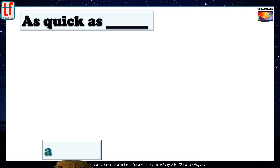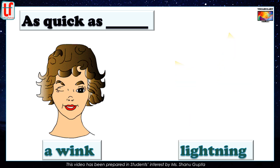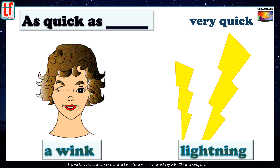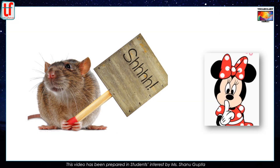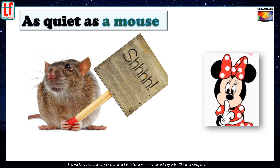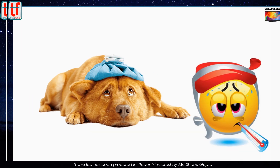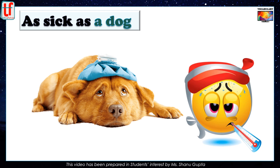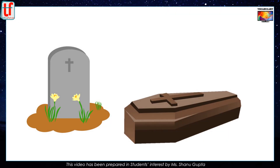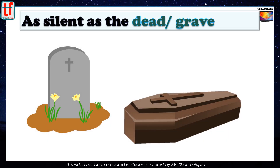As quick as a wink, or as quick as lightning — both of these expressions mean very quick. As quiet as a mouse. A mouse can quietly sneak into your house without getting noticed, so this simile means very quiet. As sick as a dog — it means very sick. As silent as the dead, or as silent as the grave — means completely silent.